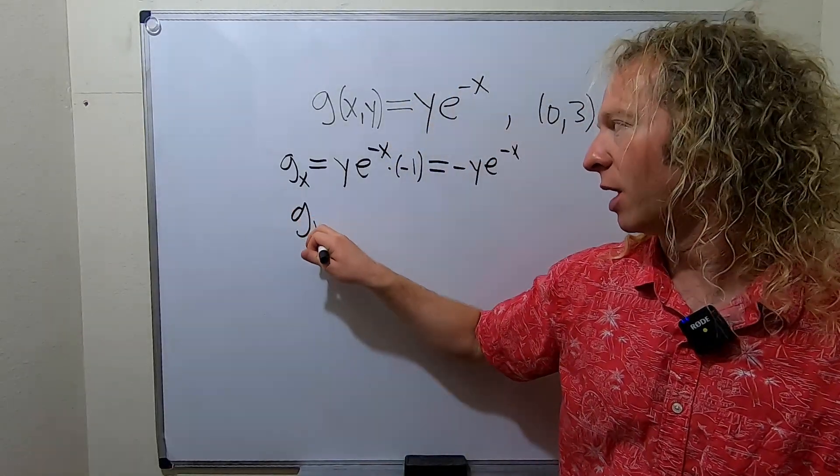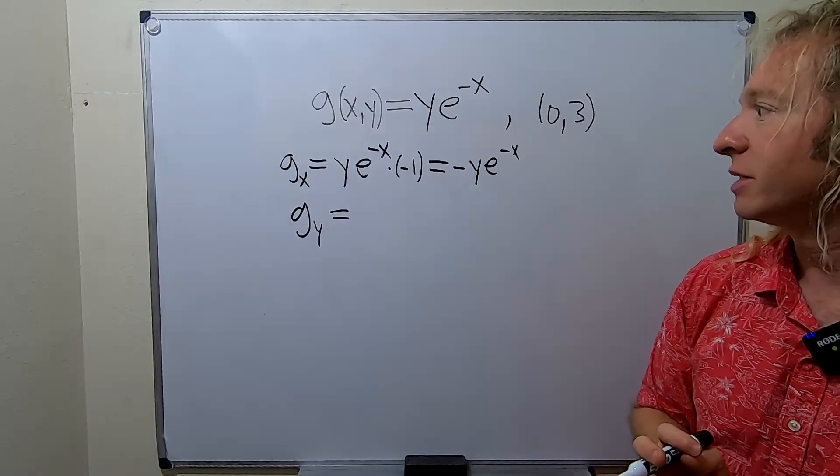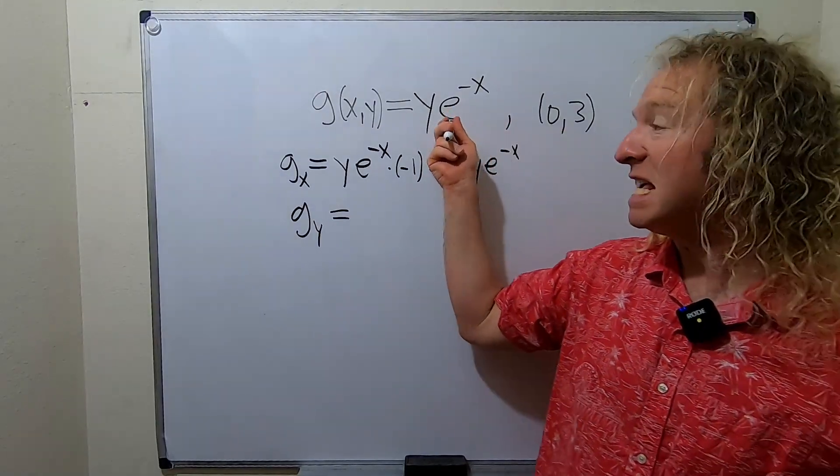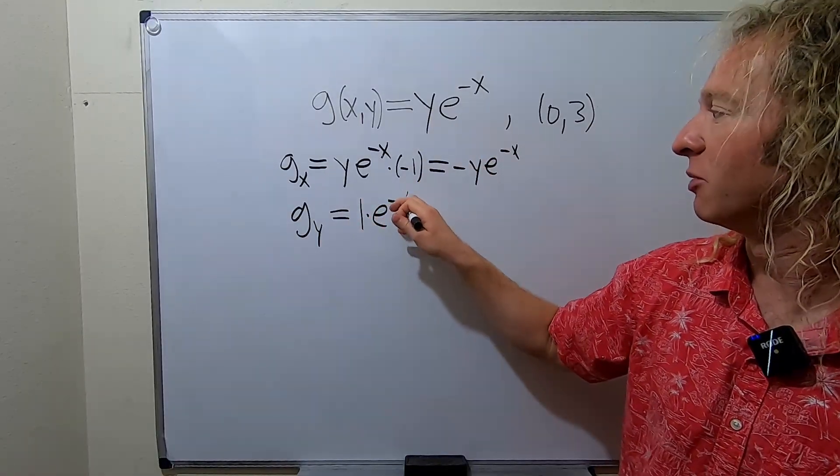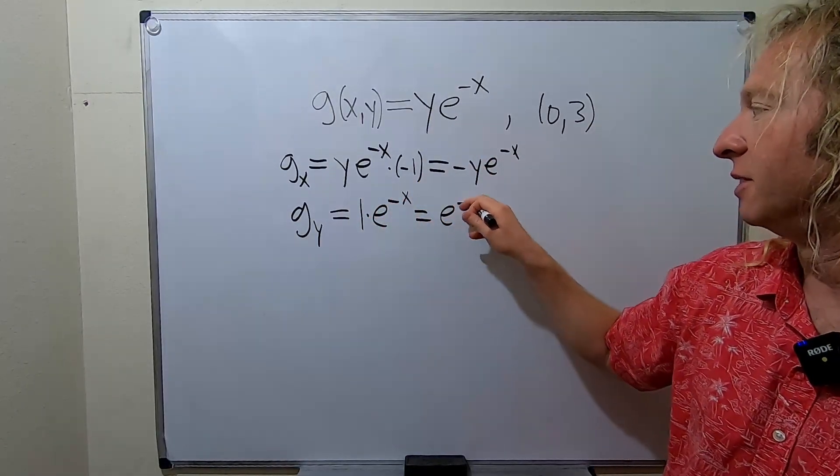So now we're going to compute gy. This time e to the negative x is a constant. So the derivative of y is 1 and this piece just hangs out. So we end up with this here.